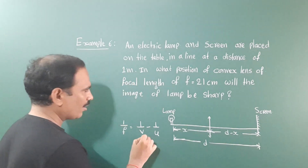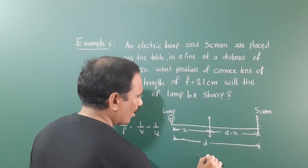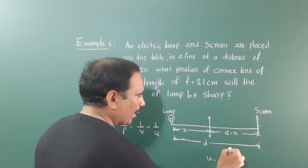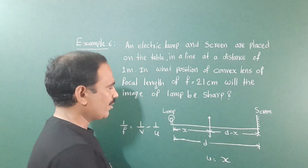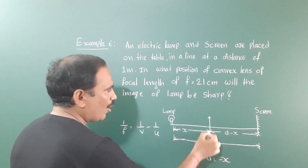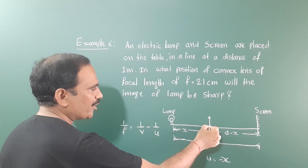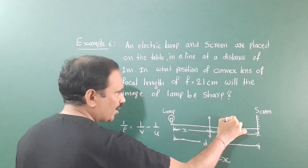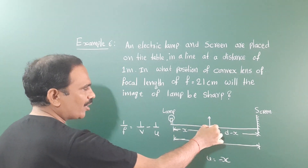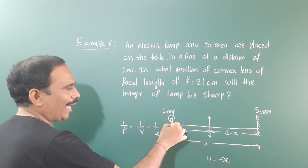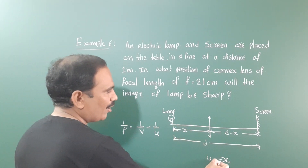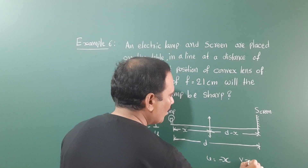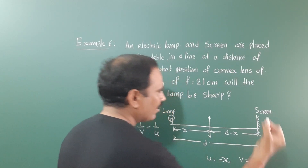Here, object distance u equals the lamp-to-lens distance, which is x. But according to the sign convention, it is minus x — opposite to the incident ray. We measure from the lens to the lamp in the direction opposite to the incident ray. That is why object distance is minus x. Image distance v equals d minus x.